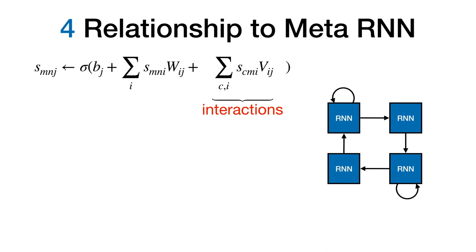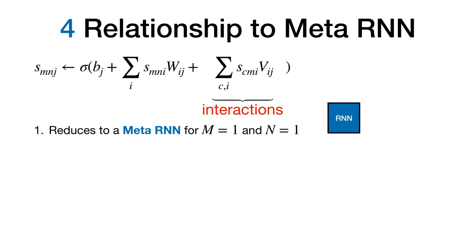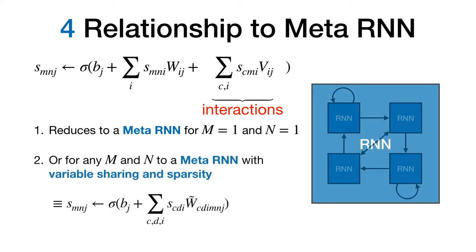Now that we understood how variable shared meta learning generalizes learned learning rules and fast weights, let's look at the connection to meta RNNs. The first observation is that if we set m equals 1 and n equals 1 and feed all the data into a single RNN we recover the standard meta RNN. And the other interpretation is that for any m and n our variable shared meta RNN is a standard meta RNN where the weight matrix is sparse and has shared entries. In this case the data is distributed across the RNNs.